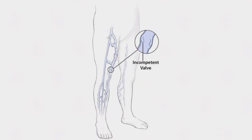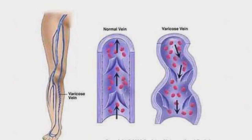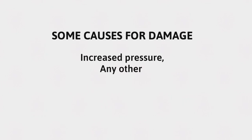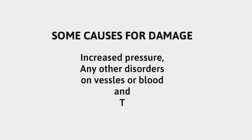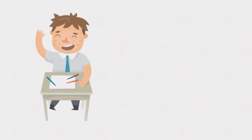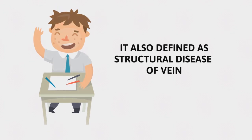Varicose veins are commonly caused by weakened and damaged walls and defective valves of veins. The damage is due to increased intraluminal pressure — that is, increased pressure of blood inside the veins for various reasons. It is a structural disorder of veins.